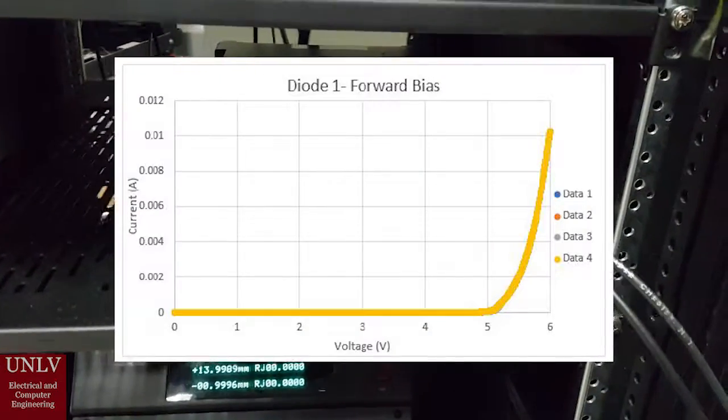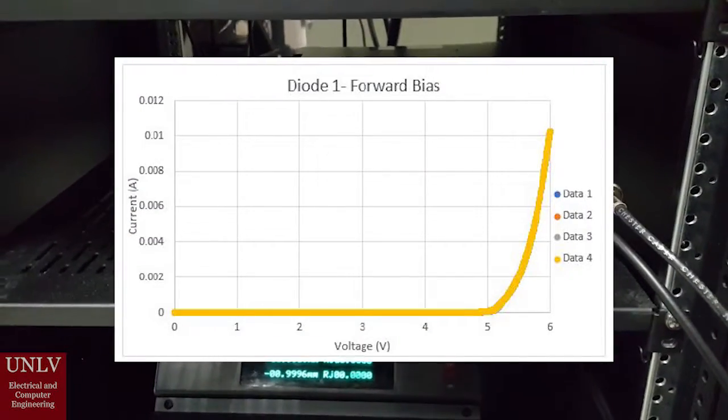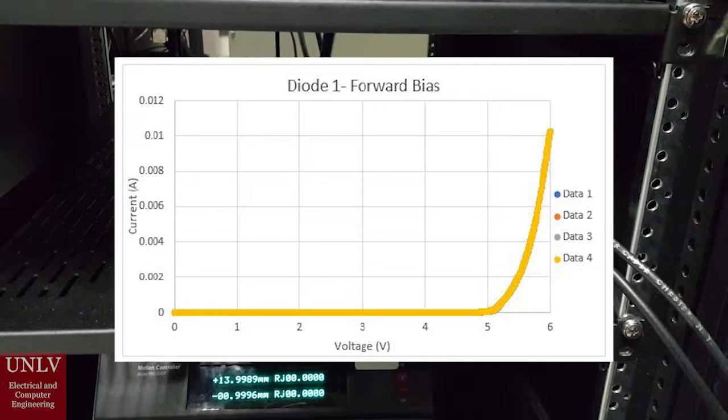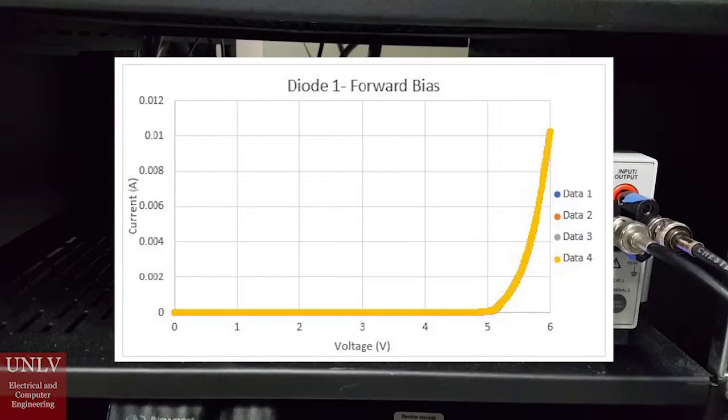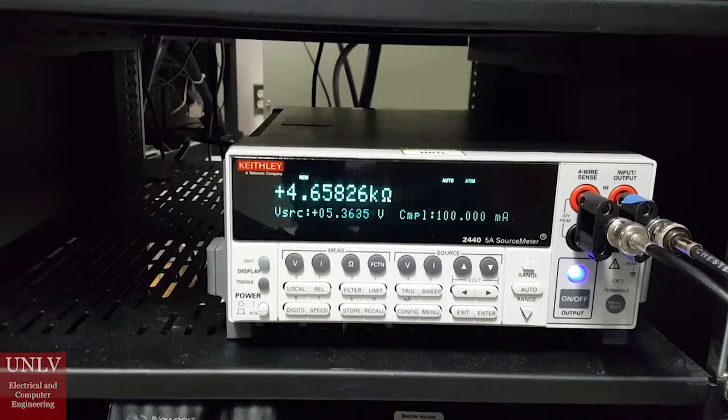The first two tests are the current voltage curves in forward and reverse bias. The curves help us identify what the electrical operating conditions of the diodes are.